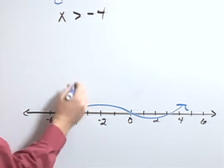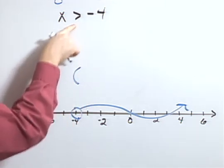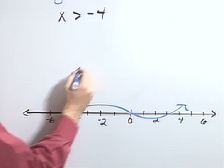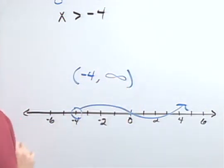Finally, writing this in interval notation, I would have a parenthesis, because it's non-inclusive, because of my sign. So negative 4 all the way to infinity.